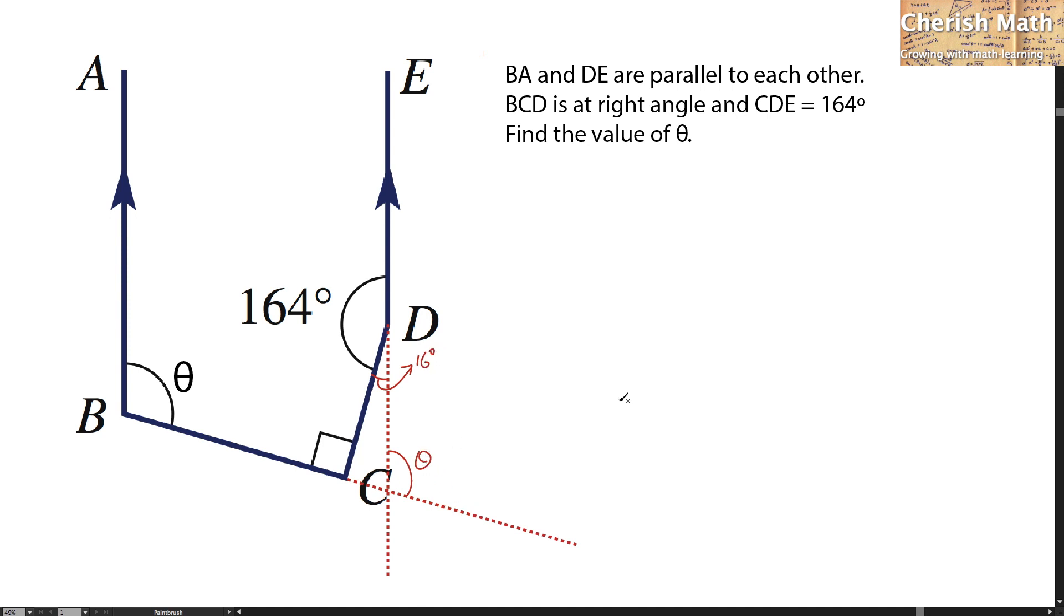So the value of theta is the sum of the interior of the opposite angles, which is 16 degrees here. And for this part, it is 90 degrees. That will be 16 degrees plus 90 degrees. And the answer of theta I am getting here is 106 degrees. And we solve the puzzle.